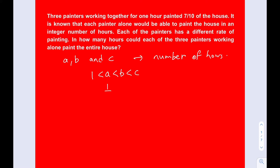If we just reverse the process, one over c is less than one over b, and that's less than one over a. We also know that one over a plus one over b plus one over c is equal to seven tenths, because all together in one hour they can paint seven tenths of the house.